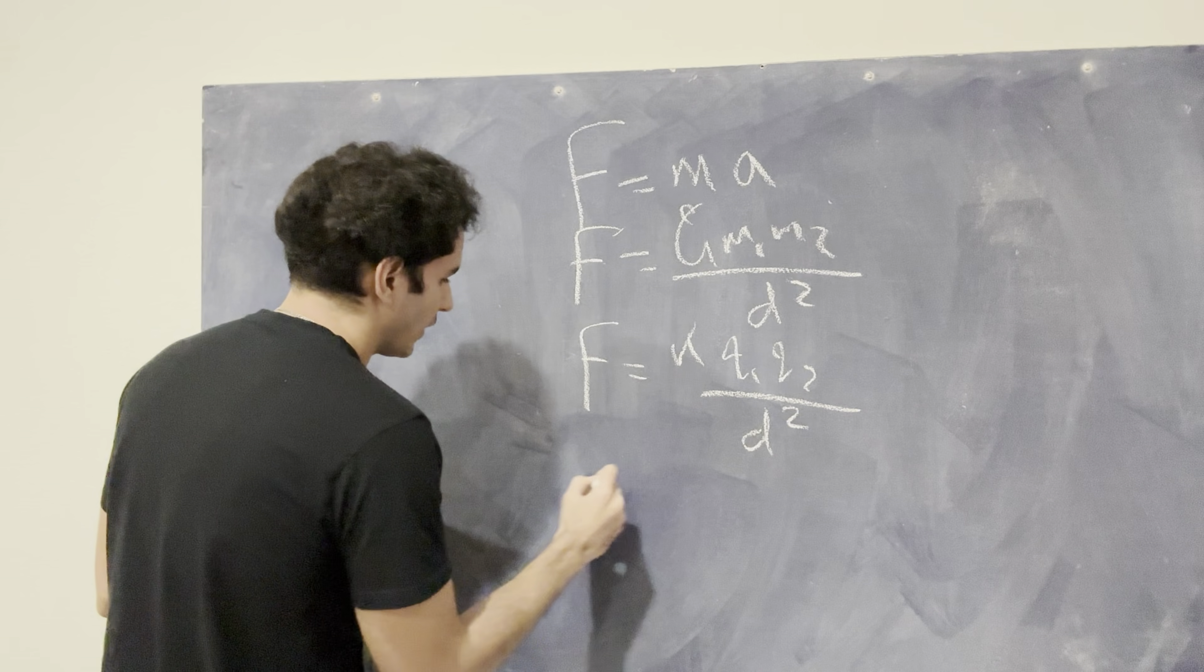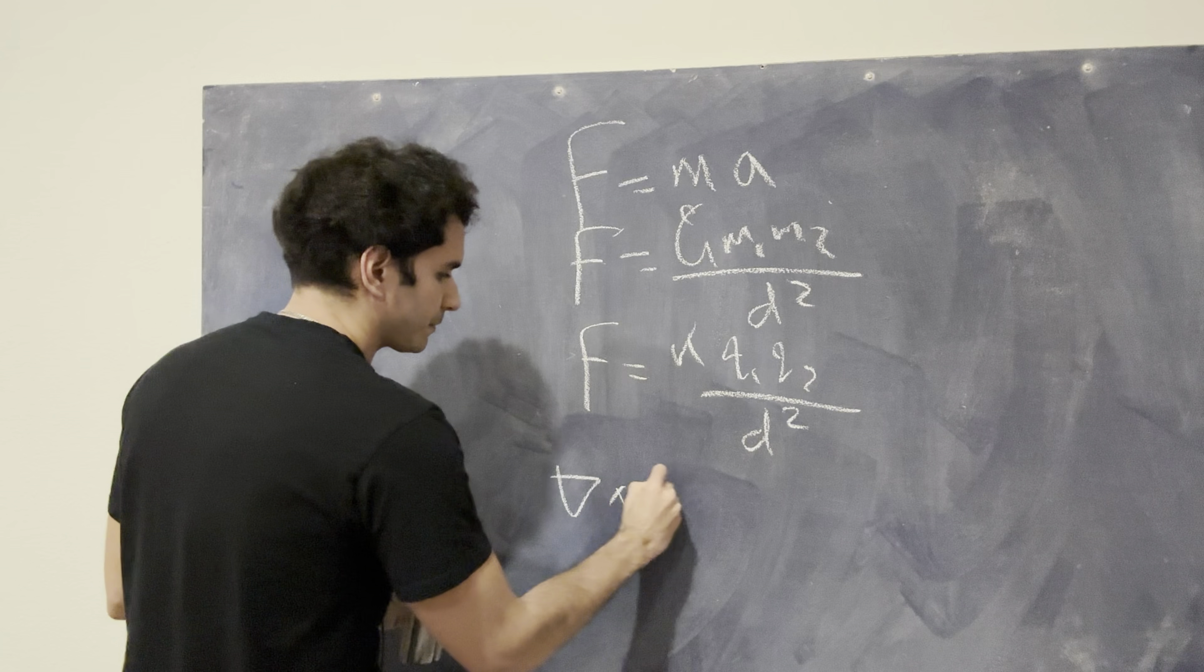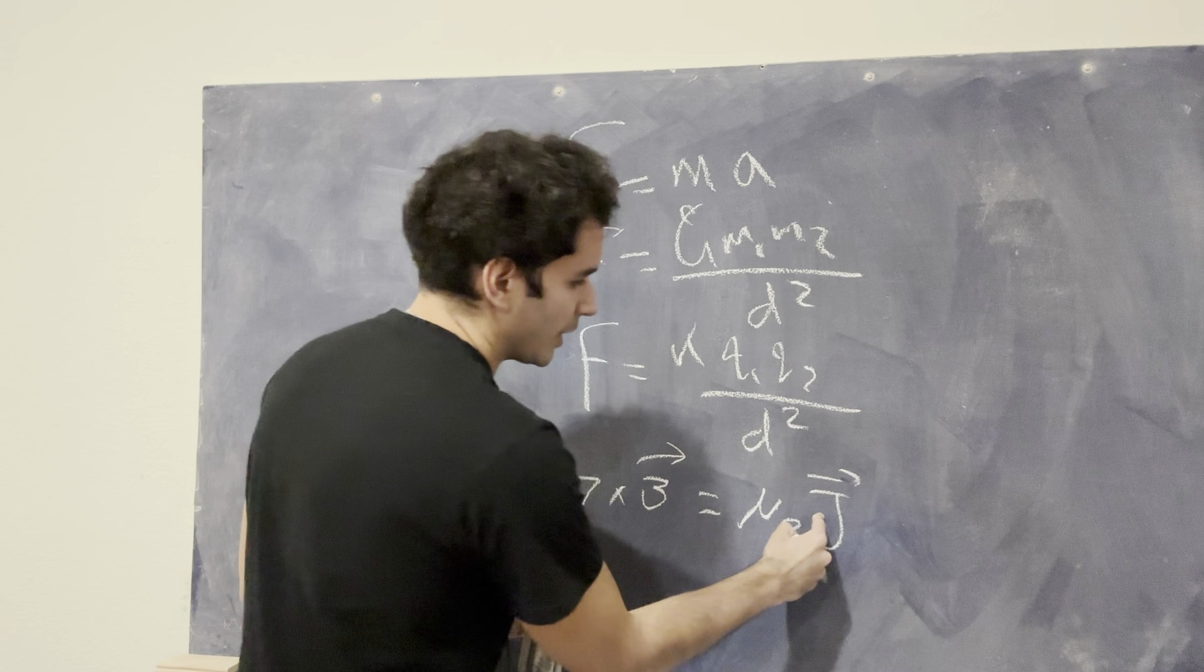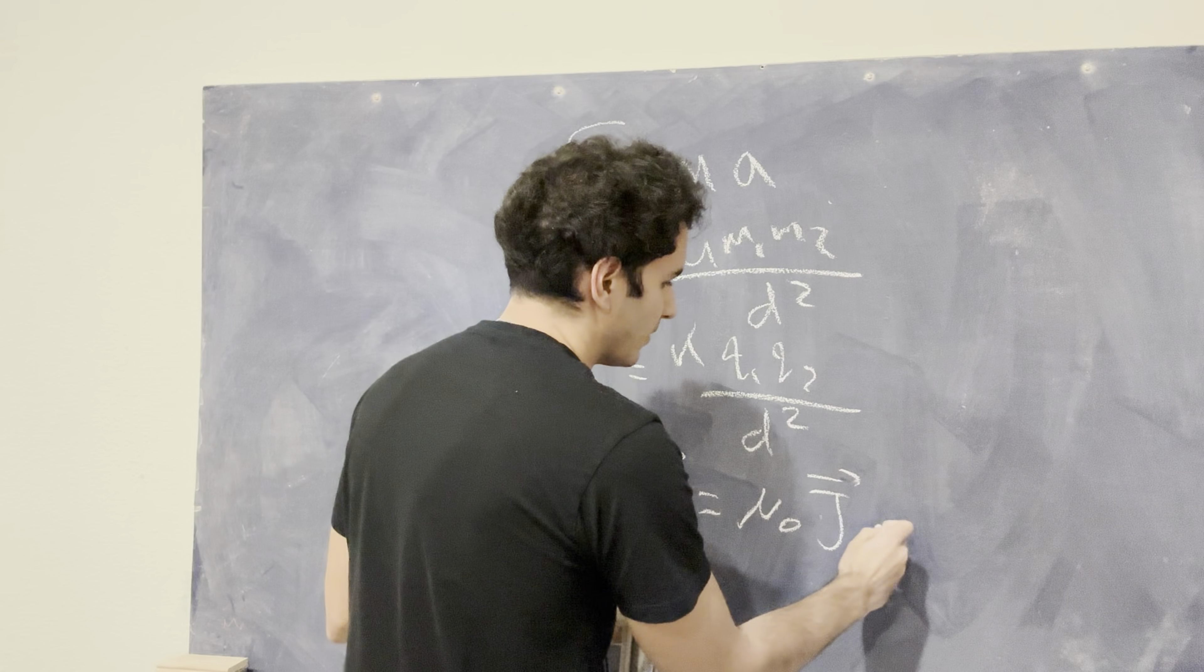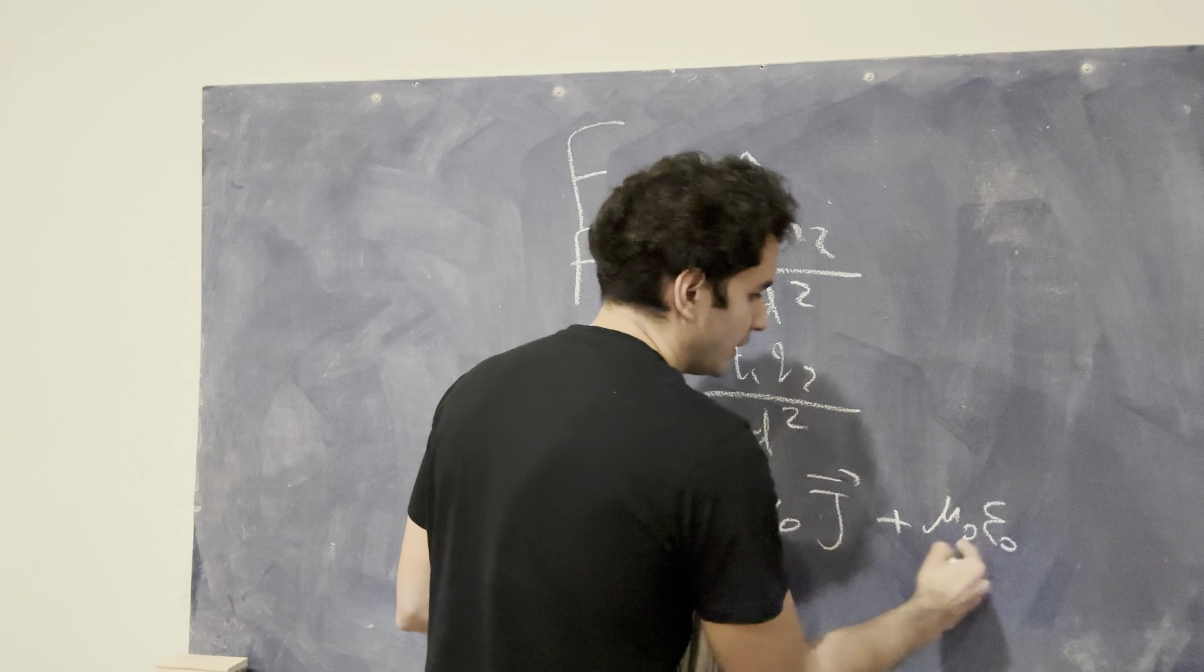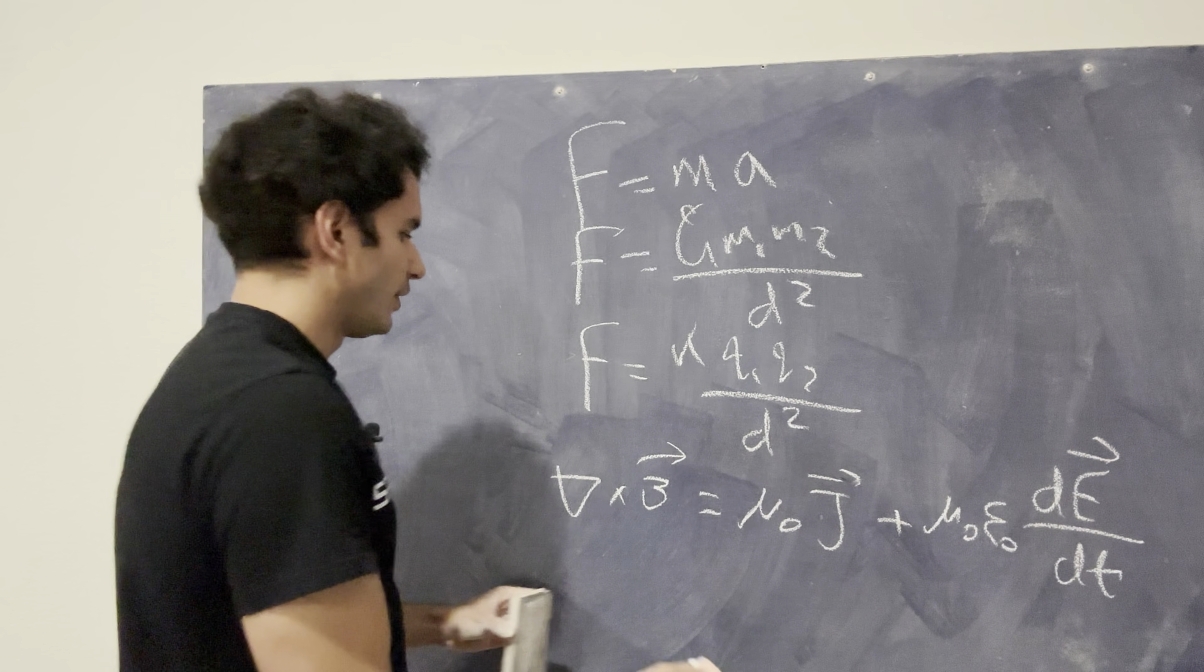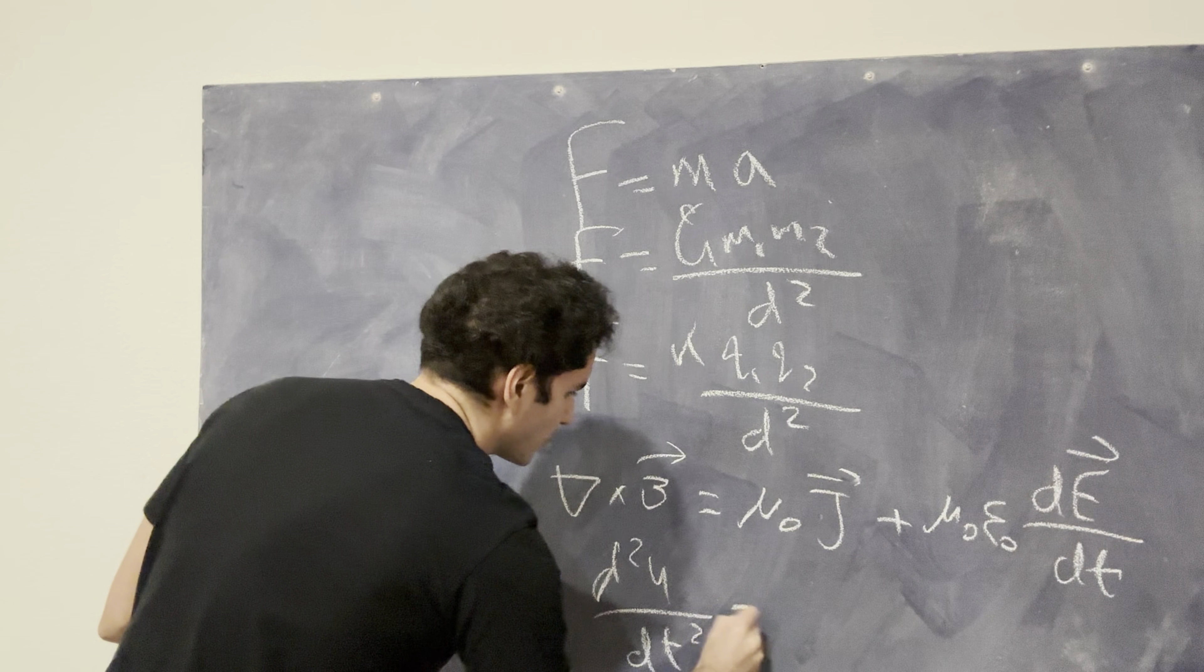Then we talked about the fourth law of Maxwell's equations, which is the Ampere-Maxwell law, which again stated that a changing magnetic field is going to be caused by either current density j, and then this mu_0 basically has to do with the material that the current is traveling through. Then same thing here, mu_0 and epsilon_0, this is basically describing the material in which the electric field is changing through. Then finally, we went over our good friend, the wave equation.